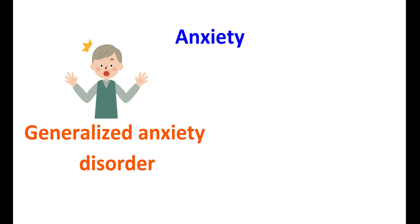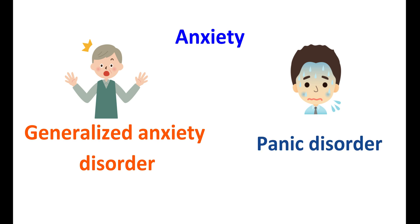In some people, anxiety may be associated with panic symptoms, and that type of anxiety disorder is called panic disorder. It is associated with physical symptoms like sweating, tremors, and rapid heartbeats. Another type is social anxiety disorder, where people may have anxiety about social interactions, or they may have phobias towards a particular place, thing, or action.